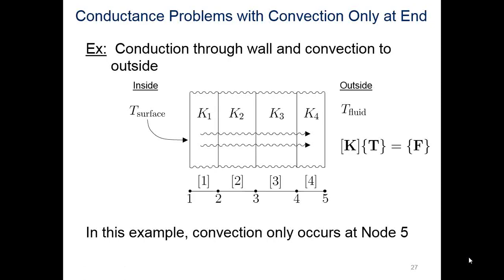Now we're going to work on a conductance problem with convection at one end. We're looking at conduction through a plane wall that extends infinitely in these directions, with convection to the fluid. Node five interacts with that fluid.